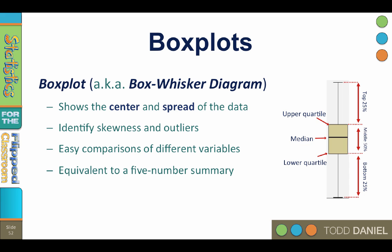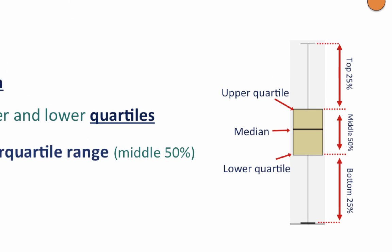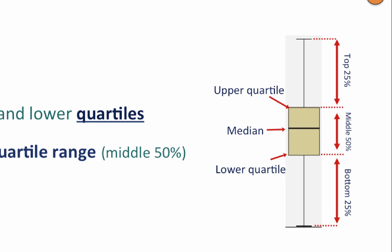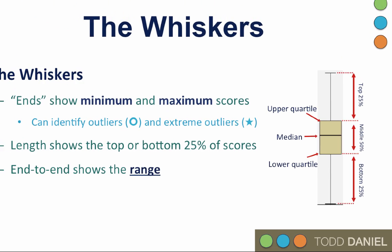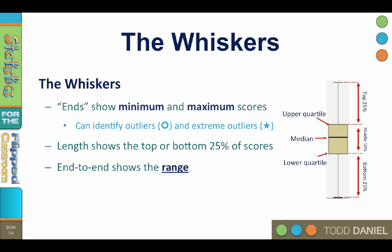The box plot is the graphical equivalent to a five-number summary. The line in the middle of the box is the median. The ends of the box show the upper and lower quartiles, and the length of the box shows the interquartile range — the middle 50% of the scores. The ends of the whiskers show the minimum and maximum scores. In SPSS, the whiskers are trimmed to identify outliers, indicated by a small open circle, and extreme outliers, identified by a star.